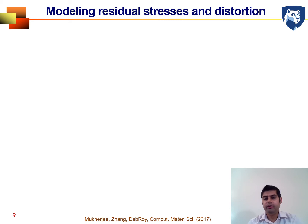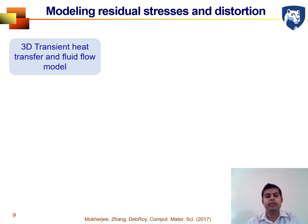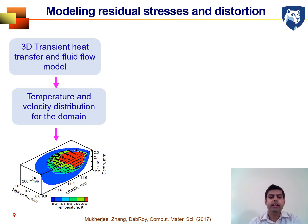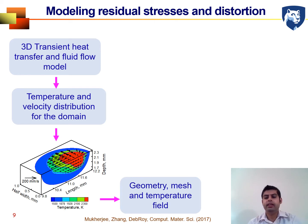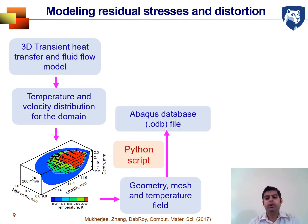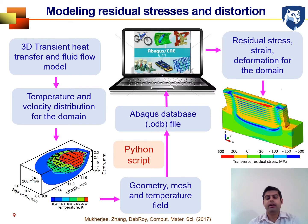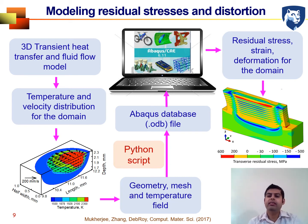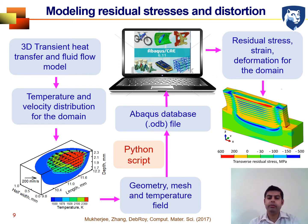Our first defect is residual stress. We calculate it using the mechanistic model: the heat transfer and fluid flow model computes the 3D temperature distribution, and we extract the temperature, geometry, and mesh data and export it to Abaqus by creating an ODB database file using a Python script. The Abaqus-based finite element model then computes the residual stress, strain, and distortion from the temperature field.